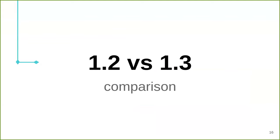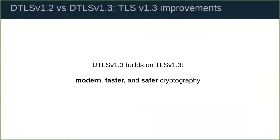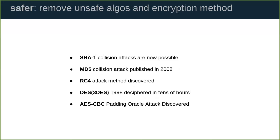Now let's go over the differences between DTLS 1.3 and the older version, 1.2. First, DTLS 1.3 builds on top of TLS 1.3, so all the improvements in TLS 1.3 over TLS 1.2 are also present in DTLS 1.3. In particular, it uses a more modern, faster, and safer cryptography. Many old algorithms that have proven to be weak or have known attacks are completely removed from the protocol.